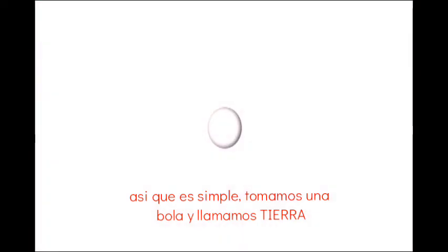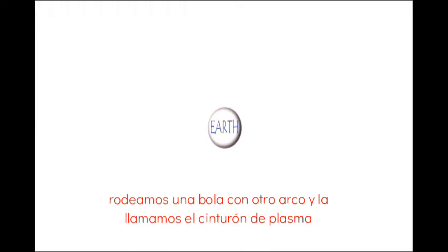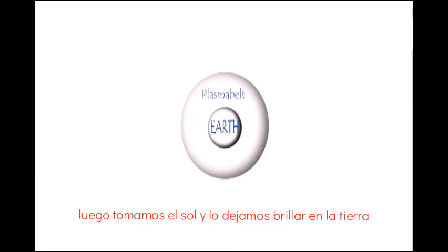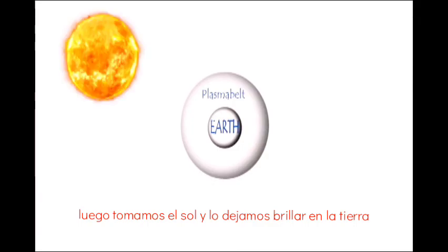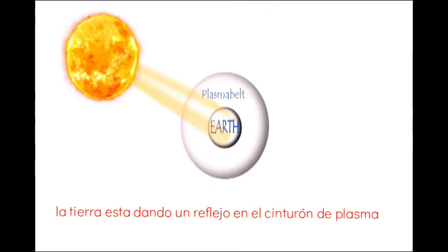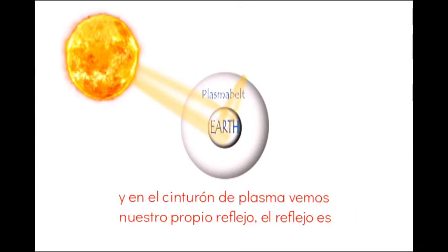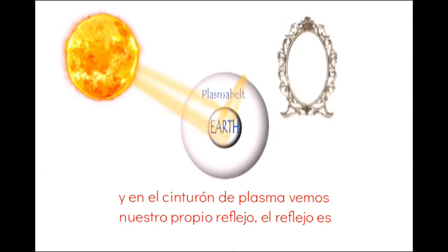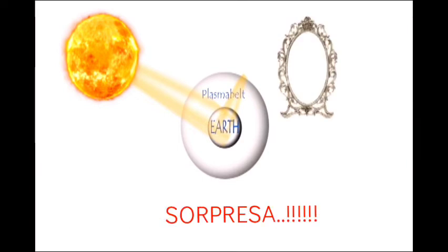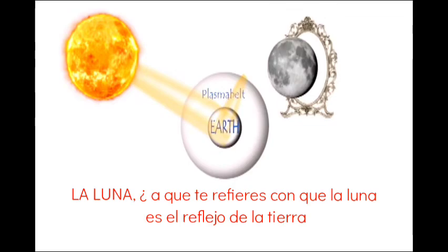We are going to start with the spherical theory. It's simple: we take a ball and we call it Earth, we surround this ball with another ball and we call it the plasma belt. Then we take the Sun and we let it shine on the Earth. The Earth gives a reflection on the plasma belt, and on the plasma belt we see our own reflection. That reflection is — surprise — the Moon.